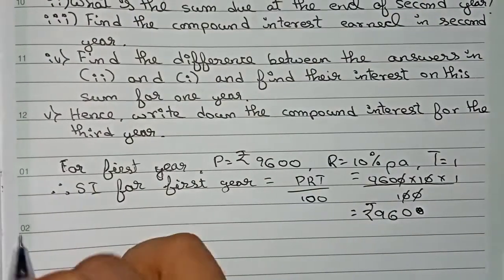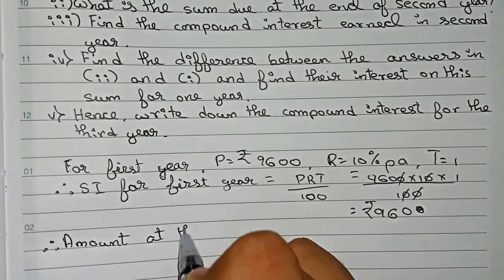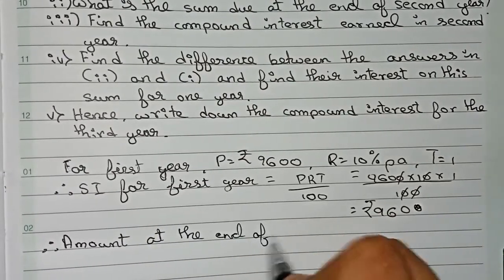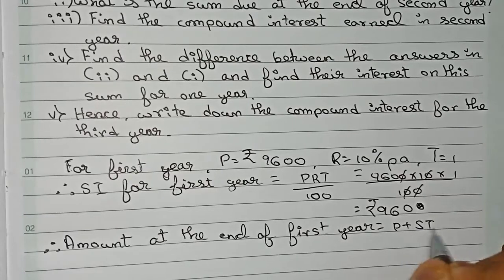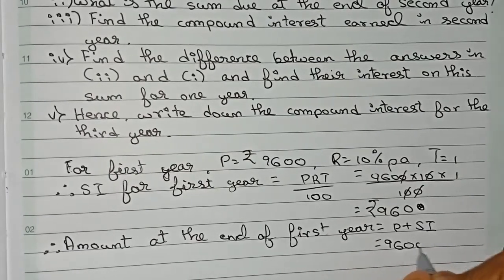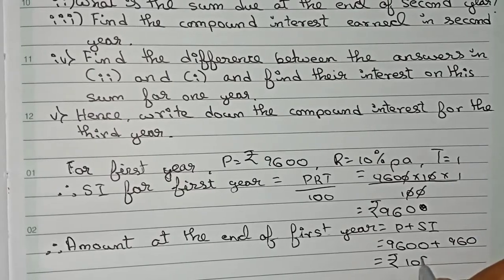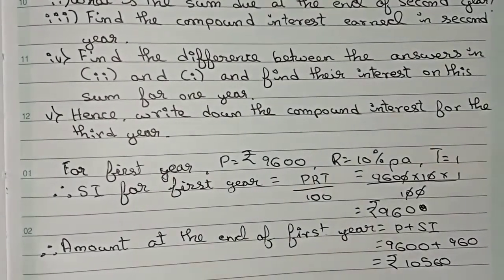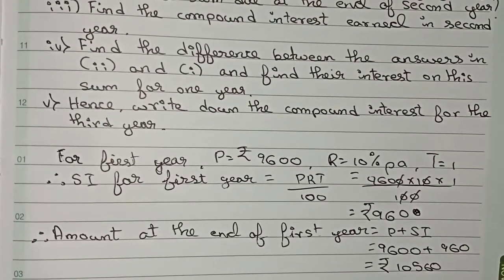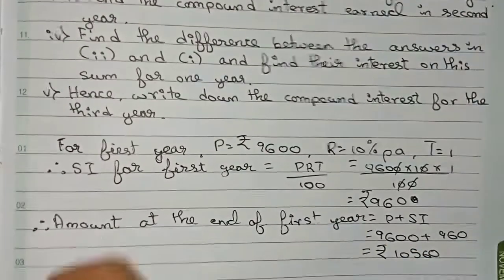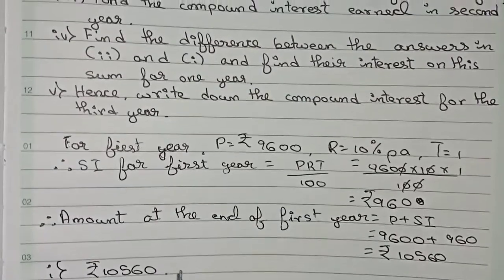Now to find the amount at the end of the first year, the formula is principal plus SI. So we put the values: principal ₹9,600 plus SI ₹960, which gives ₹10,560. Therefore this is the amount at the end of the first year, and the answer for question number one is ₹10,560.